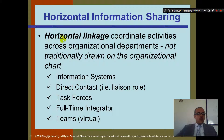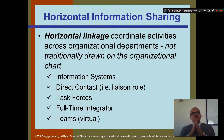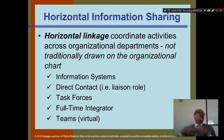Now let's look at horizontal. Horizontal linkage coordinates activities across the organization — more across, not top to bottom. They're not traditionally drawn on the organization charts, so you normally don't see this on the org chart. Information systems also help the horizontal. For example, when you do your homework alone and send it to the instructor, it's more vertical. If you go with your friends and share in an online chat room, that becomes more horizontal.